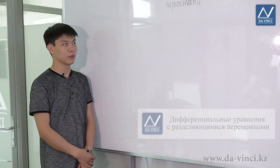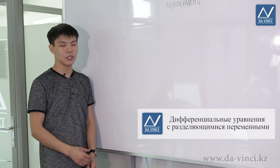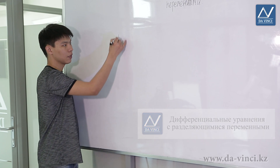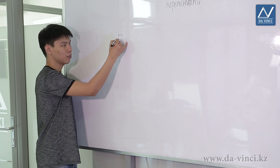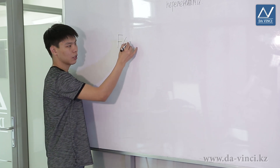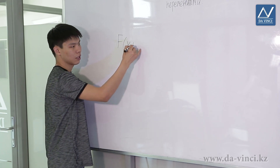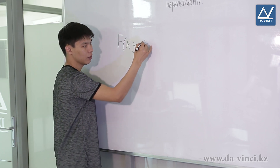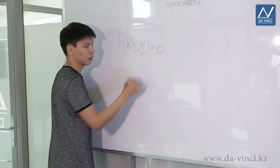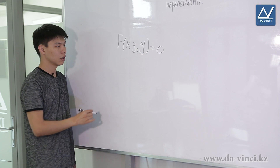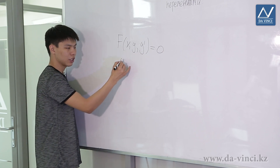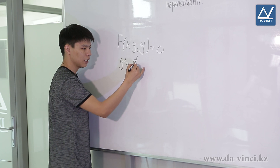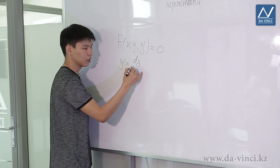In this lesson we'll consider separable differential equations. Let's consider a differential equation of the first order — an equation that depends on x, the desired function y, and its first derivative y', equal to zero. Let's remember that we could denote the derivative y' as dy by dx.